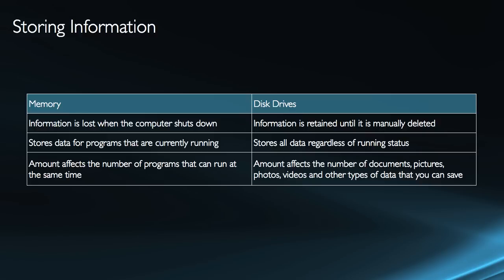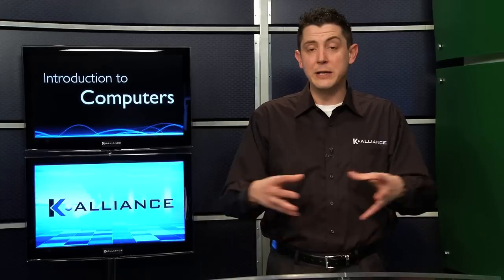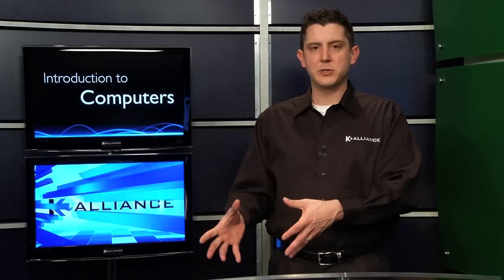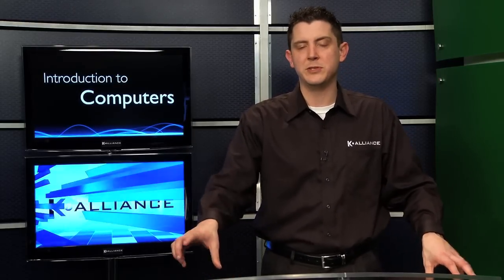This is not an exhaustive look at either of these components, but it helps us understand the relationship between them. Permanent storage is on disk drives; temporary storage for running programs is in memory. The more memory you have, the more programs you can run. The more drive space you have, the more information you can permanently save.